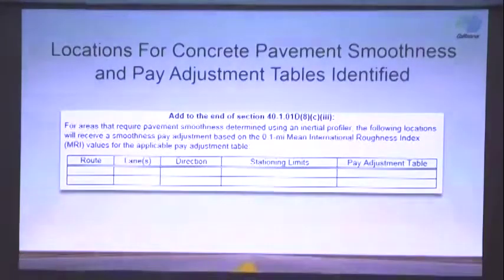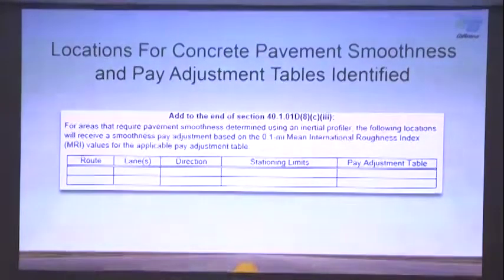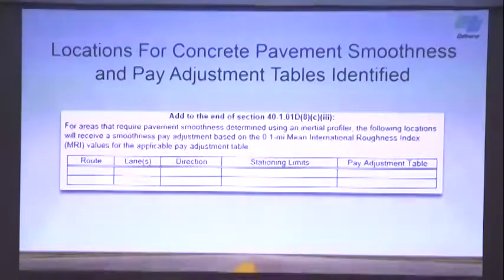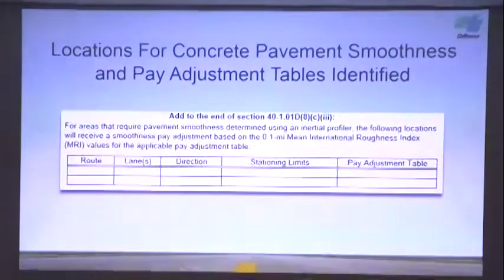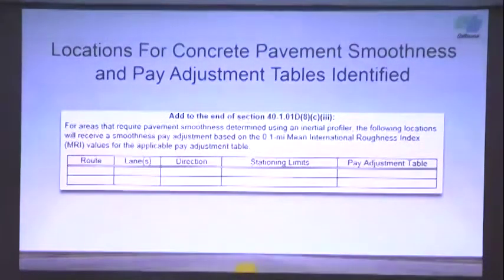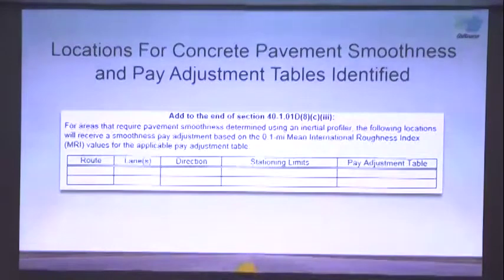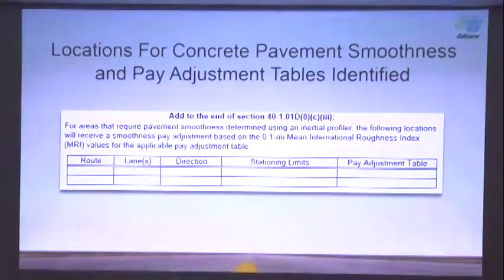The NSSP will be issued as an NSSP in Section 40, and the designer will fill out this table. It shows where the smoothness requirements will apply, and it has location for route, lane, direction, station limits, and which pay adjustment table applies.